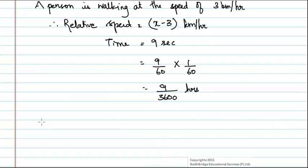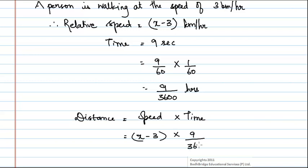We know that distance is equal to speed into time. Here, speed is x minus 3 km per hour into time 9 by 3600 hours. Consider this as equation 1.